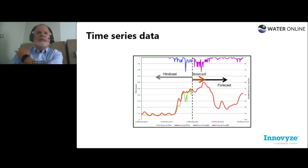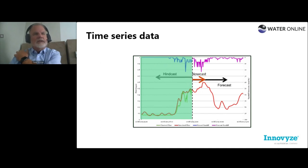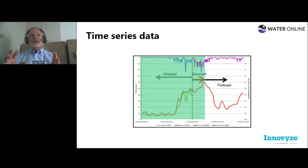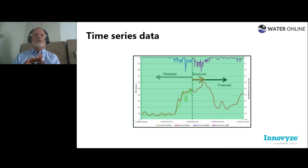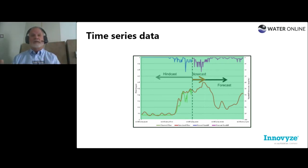When looking at time series data — all sorts of systems do historical hindcasts to understand past data. When we get into digital twins and live modeling, we build nowcasts — seconds, minutes, or hours of what's happening right now. But the big-ticket item is forecasts: what is going to happen hours, days, or weeks from now? That's what gets us into understanding live hydraulic modeling and responding to events — especially extreme events like floods. How is the system going to respond? What are we going to do now?